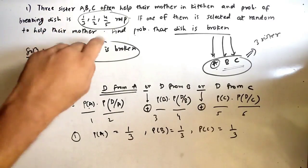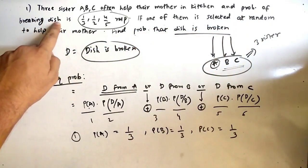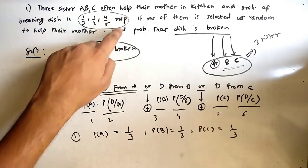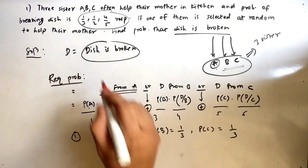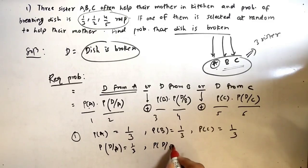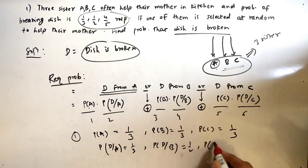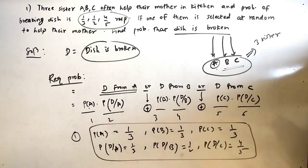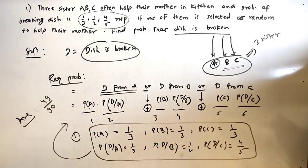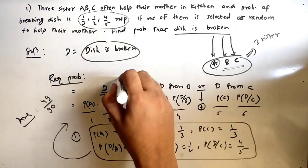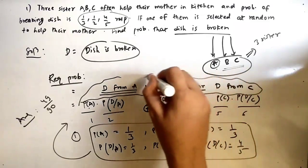So P(D|A) = 1/3, P(D|B) = 1/2, and P(D|C) = 4/5. Now we have all six terms — just plug in the values and the answer is 49/90. The main part to remember is how to formulate the required probability using the total probability formula.